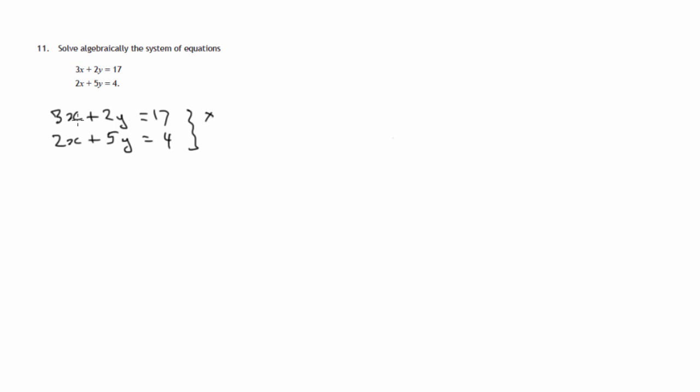So we would get 10y by multiplying the first equation by 5, the second equation by 2. Both sides get multiplied by 5. 5 lots of 3x is 15x. 5 lots of 2y is 10y. 5 lots of 17 is 85. Multiplying both sides of the second one by 2. 2 lots of 2x is 4x. 2 lots of 5y is 10y. 2 lots of 4 is 8. So we now have the same number of y's in each of them.